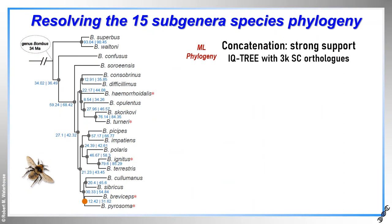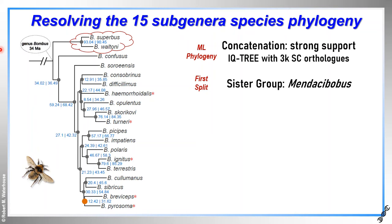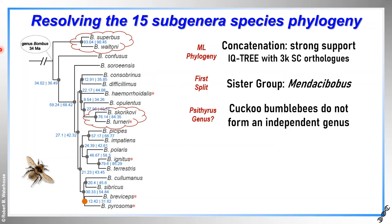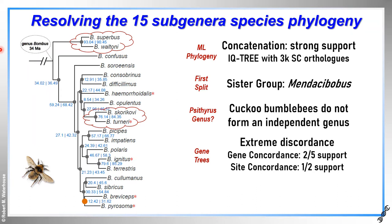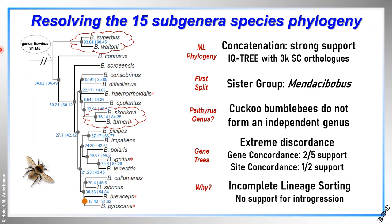Using the concatenated alignments of about 3,000 single copy orthologues, including outgroup Apis species, the maximum likelihood species phylogeny shows all nodes but one with 100 percent bootstrap support. This confidently places the subgenus represented by Superbus and Waltoni as sister group to all other Bombus subgenera, and also confirms that the cuckoo bumblebees, despite their very different behaviour and ecology, do not form an independent genus. The well-supported IQ-TREE phylogeny, however, hides extreme levels of discordance from individual gene trees, where on average nodes in the phylogeny are supported by only two-fifths of the gene trees and only half of all informative sites in the alignments. These site concordance factors and short internal branches are consistent with incomplete lineage sorting driving the gene discordance rather than introgression.